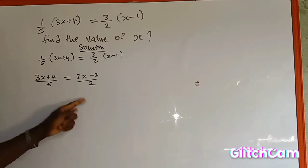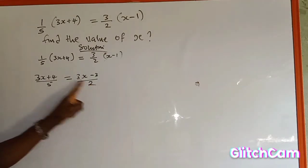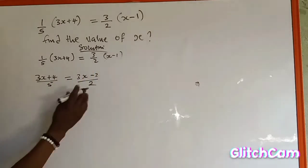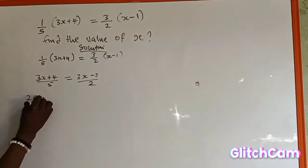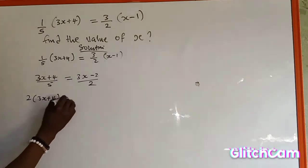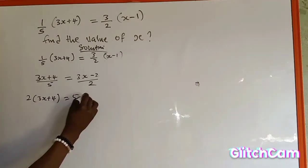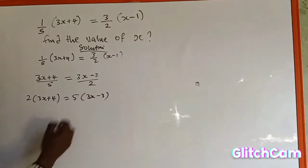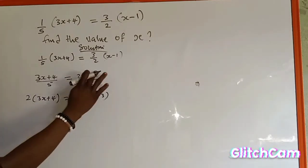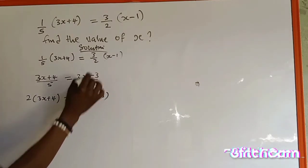multiply. Cross-multiply means we are going to use this to multiply this, then use this to multiply this. 2 into 3s plus 4, which is equal to 5 multiplied by 3s minus 3. So we have successfully cross-multiplied.